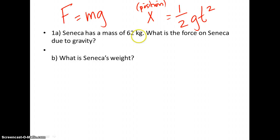The key in all of that is identifying what you have. So I always like to underline my numbers. Here we have an example where Seneca has a mass of 62 kilograms. What is the force on Seneca due to gravity? So those are some key words. So with that said, I know that 62 kilograms is a unit of mass, so I will identify that.